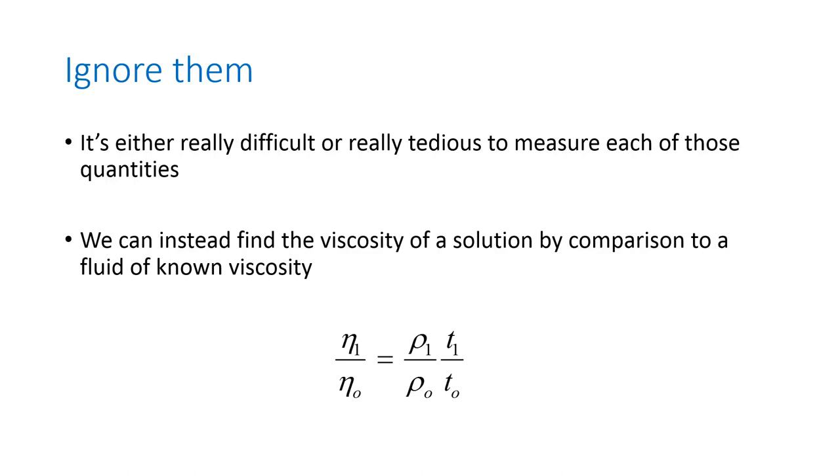So if we can find a solution that has a well-defined viscosity density, and then we can measure the time it takes in our viscometer, we can use that as all of the subscript 0 quantities in this equation. Then we can measure the density and time of our unknown solution and have its viscosity just from this equation.